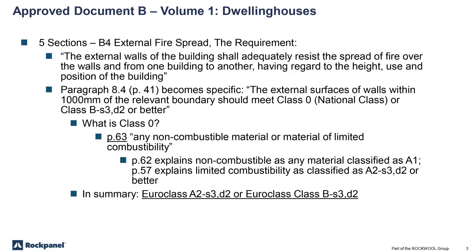There are five sections to Volume 1. B4 is the section we look at for the external fire spread requirement. The external walls of the building shall adequately resist the spread of fire over the walls and from one building to another, having regard to the height, use and position of the building. Paragraph 8.4 becomes more specific on page 41: the external surfaces of walls within 1,000 millimetres of the relevant boundary should meet Class O, National Class, or Class B, S3, D2 or better.